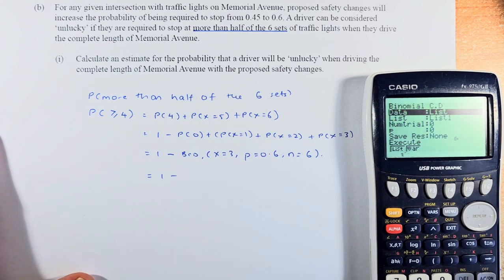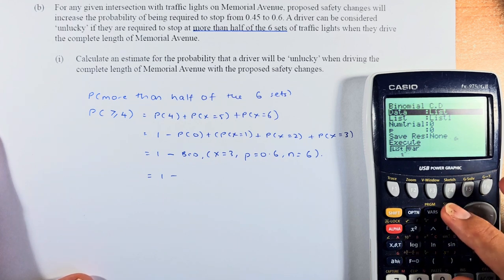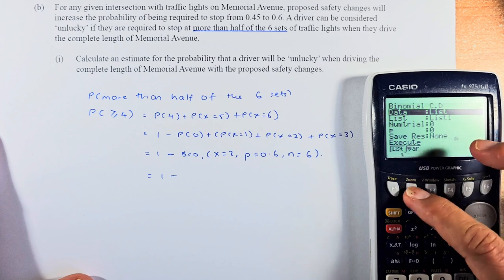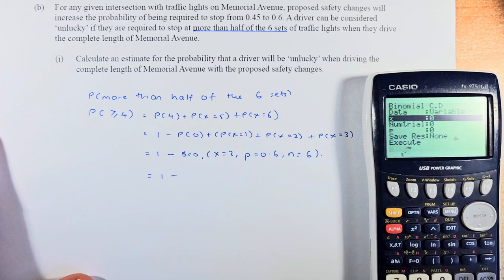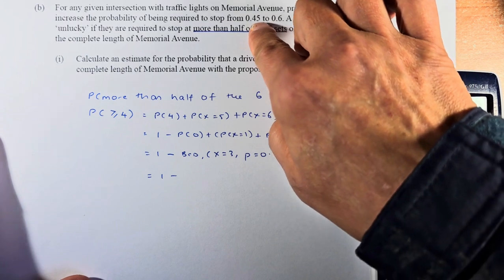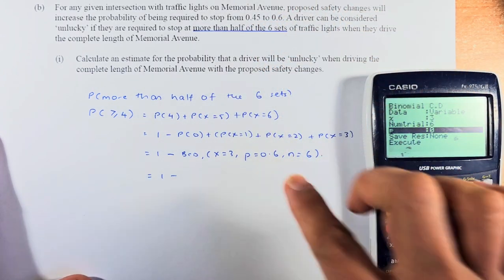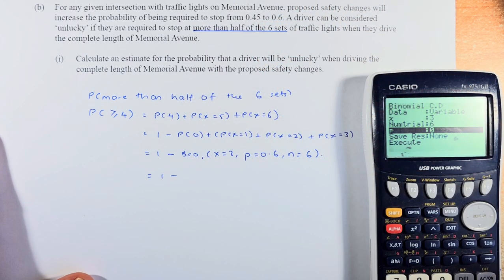Once you've got F2, we are going to key in as usual. This time it's going to be variable. Always remember, it's variable, so variable is F2. X is going to be 3, because we calculate the cumulative from 0 to 3. Execute. Number of trial is still going to be 6. P is now increased from 0.45 to 0.6. So we're going to put 0.6. Execute.